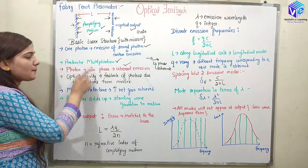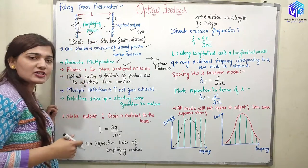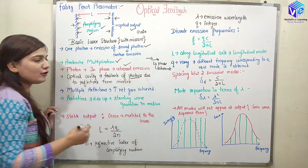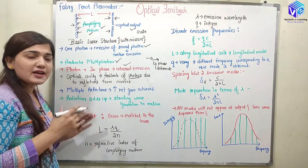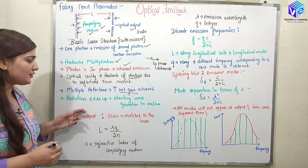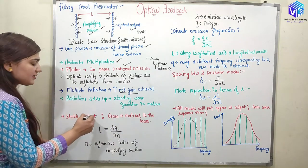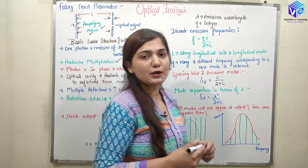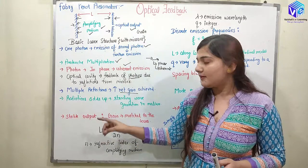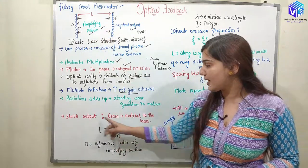The optical cavity gives the feedback action. Due to this feedback action the structure acts like a resonator — we have a feedback of photons, multiple reflections from the mirrors, and we generate gain. Multiple reflections increase the net gain achieved by this structure, producing a lot of radiation. These radiations add up and generate a standing wave in the medium. We get stable output only when the gain equals the losses. Initially photons multiply, but at stable state the gain equals losses and we get stable output.